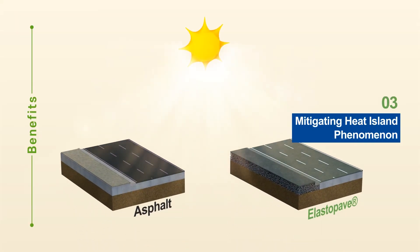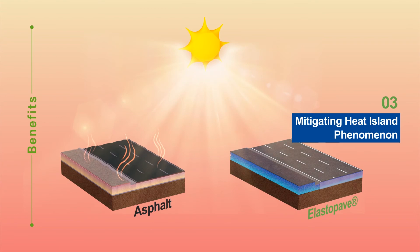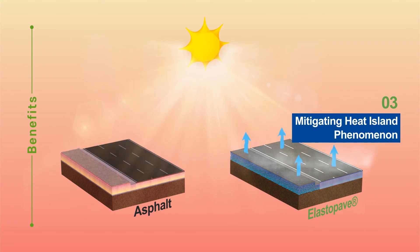ElastoPave mitigates urban heat island phenomena by evaporating water stored in the waterway. Conversely, an asphalt road accumulates heat and worsens the heat island problem.